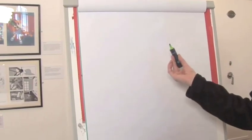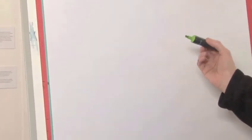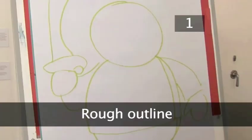It's best to do everything with a pencil first so you can rub it out if you make a mistake. We're going to use a green pen so you can see it on the page. Step 1: Rough Outline.